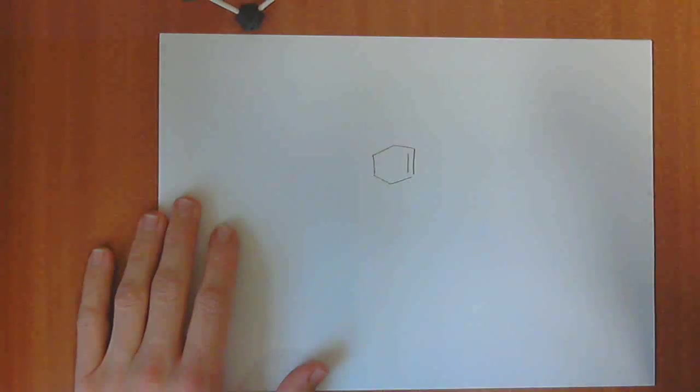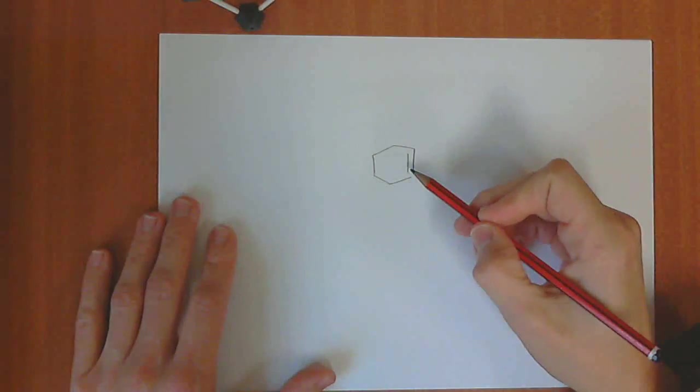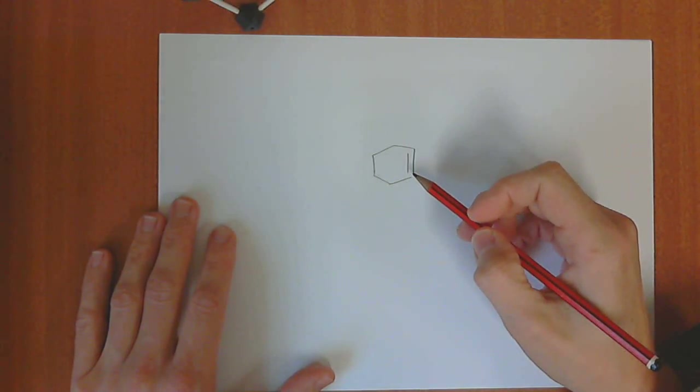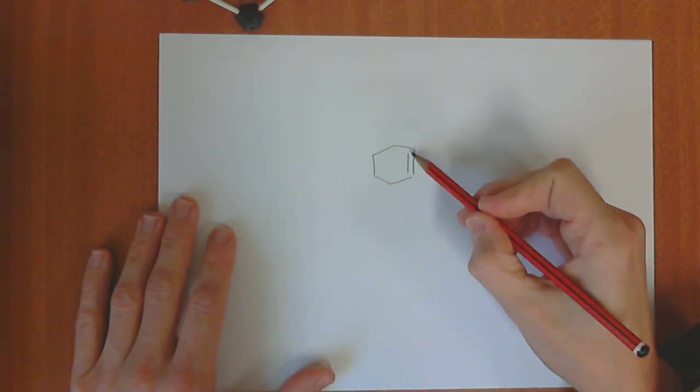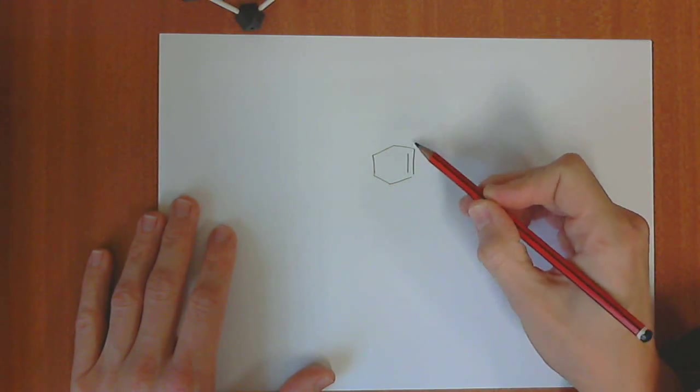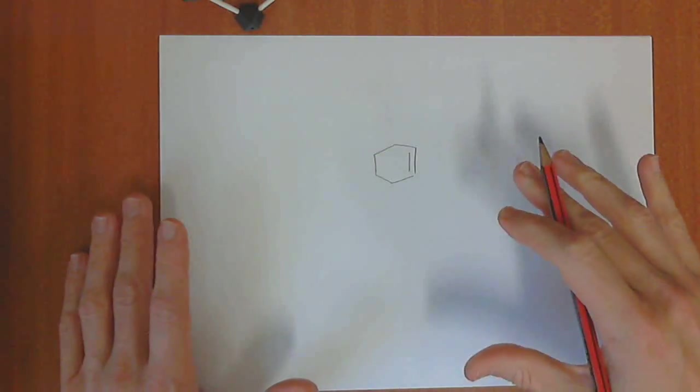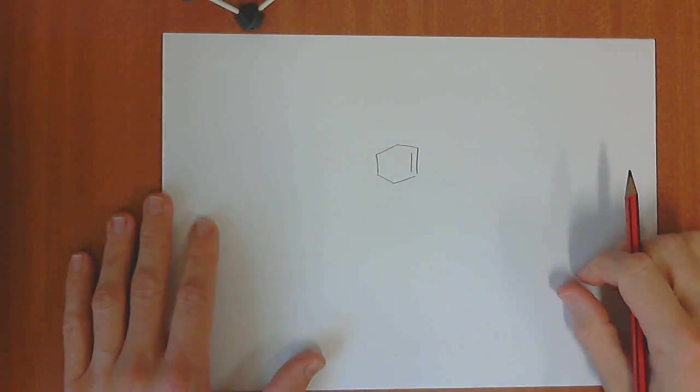I want to say a few words about the cyclohexene three-dimensional conformation. Because cyclohexene has two sp2 carbons in it, it can't adopt a perfect chair conformation that cyclohexane can.